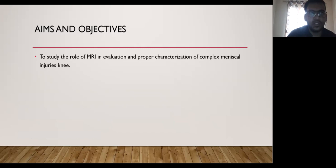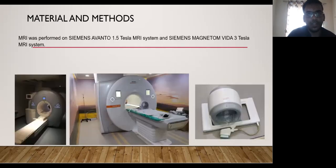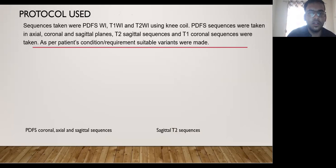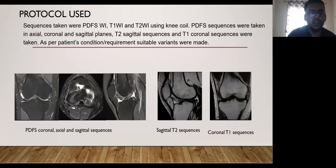The aims and objective are to study the role of MRI and to properly characterize the complex meniscal injuries of the knee. MRI was performed on Siemens Magnetom 1.5 Tesla and Siemens Magnetom 3 Tesla machines along with the knee coil. Sequences were taken in proton density fat-sat at coronal, axial, and sagittal planes. Sagittal T2 and coronal T1 sequences were also taken for each patient, with variations as per the patient's condition and requirements.